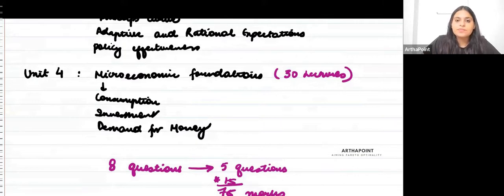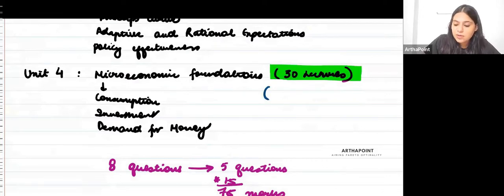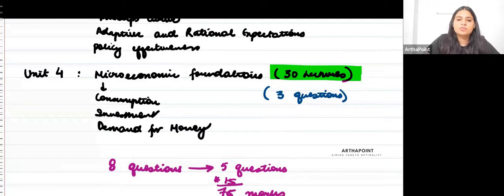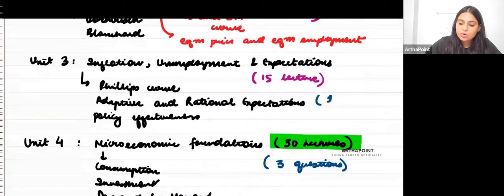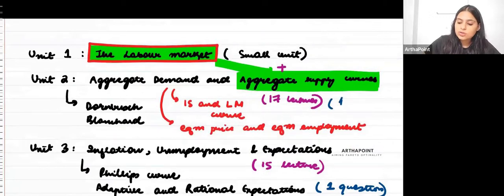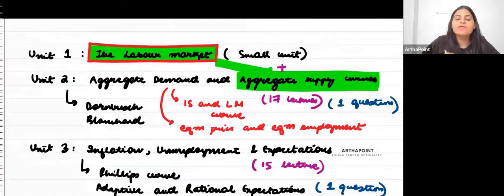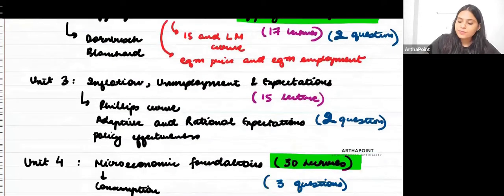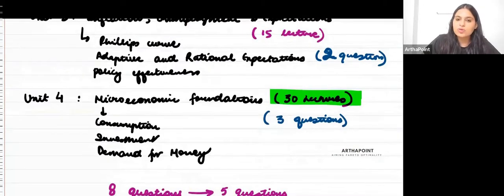Ideally, the questions that would be coming in exam will be accordingly. Since unit 4 has double the weightage compared to all other topics put together, you can expect up to two or three questions from this topic. You can expect one question from unit 3, and since units 1 and 2 are combined, maybe two questions will come from these. This is approximately how the questions would come in exam.